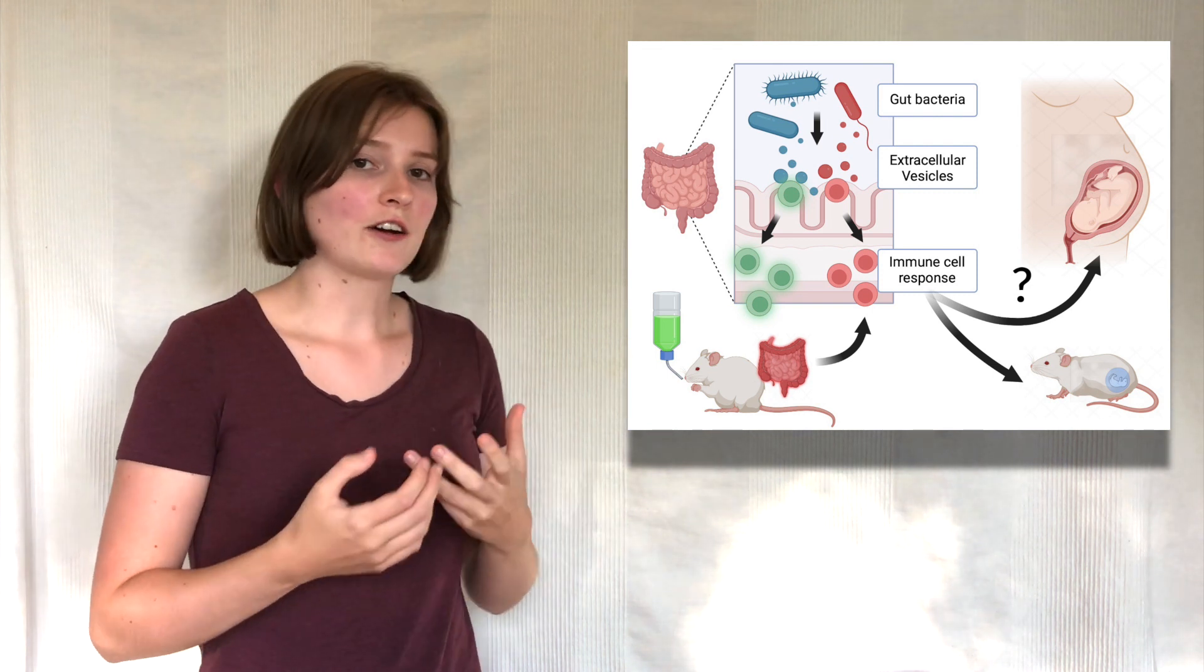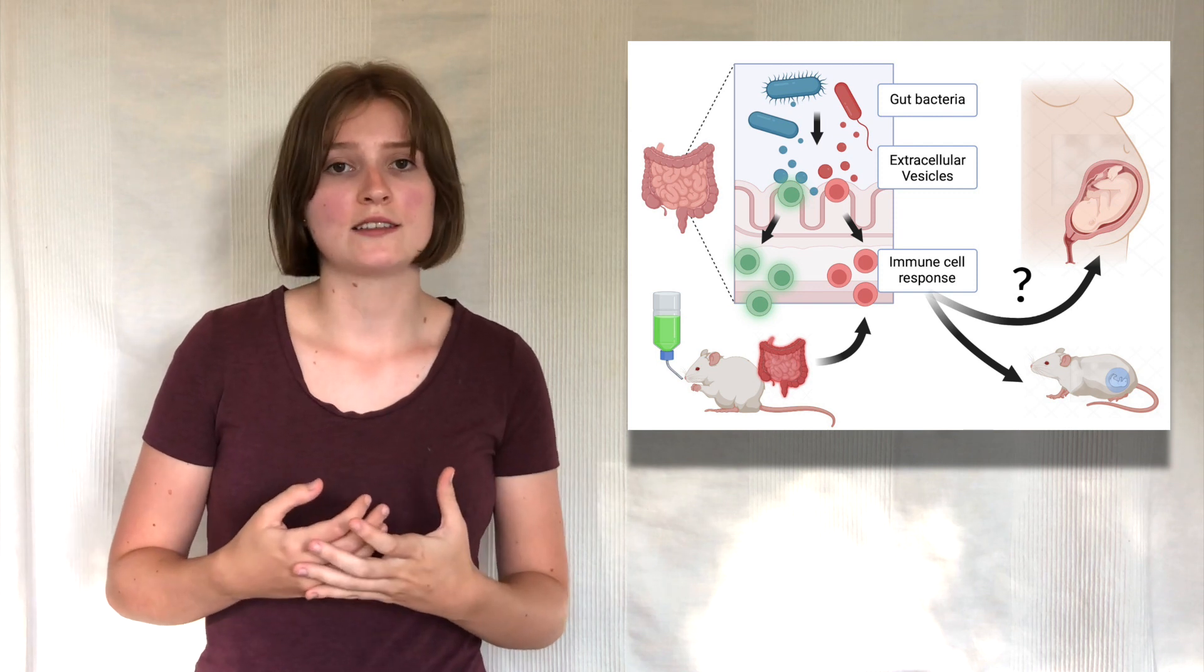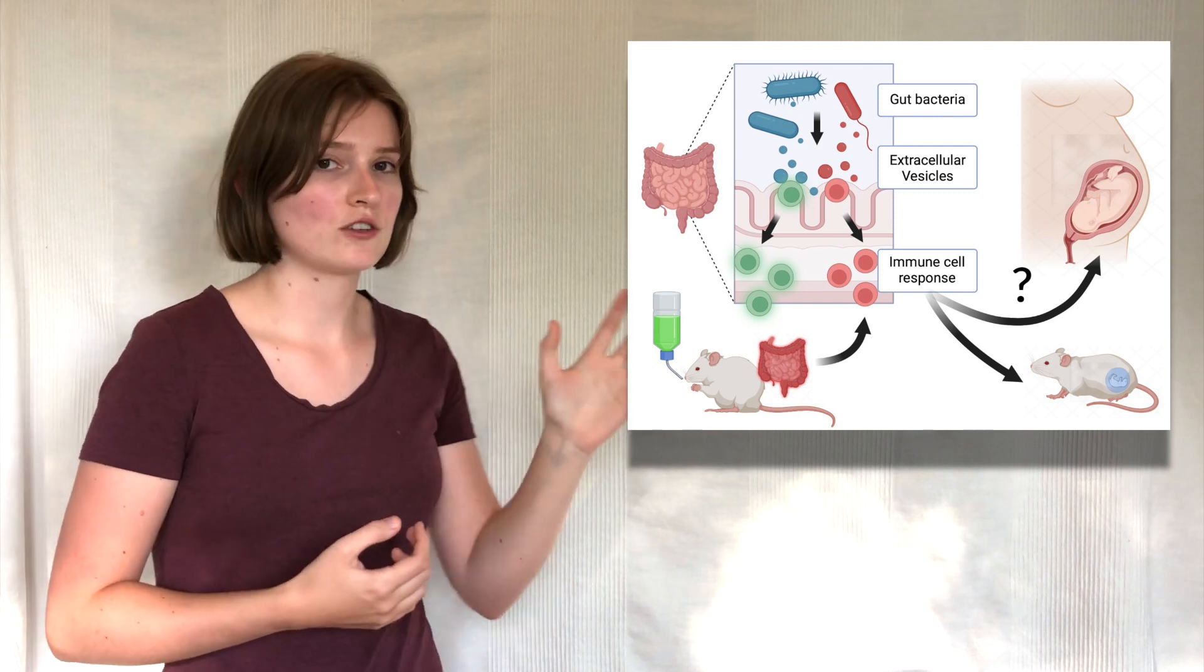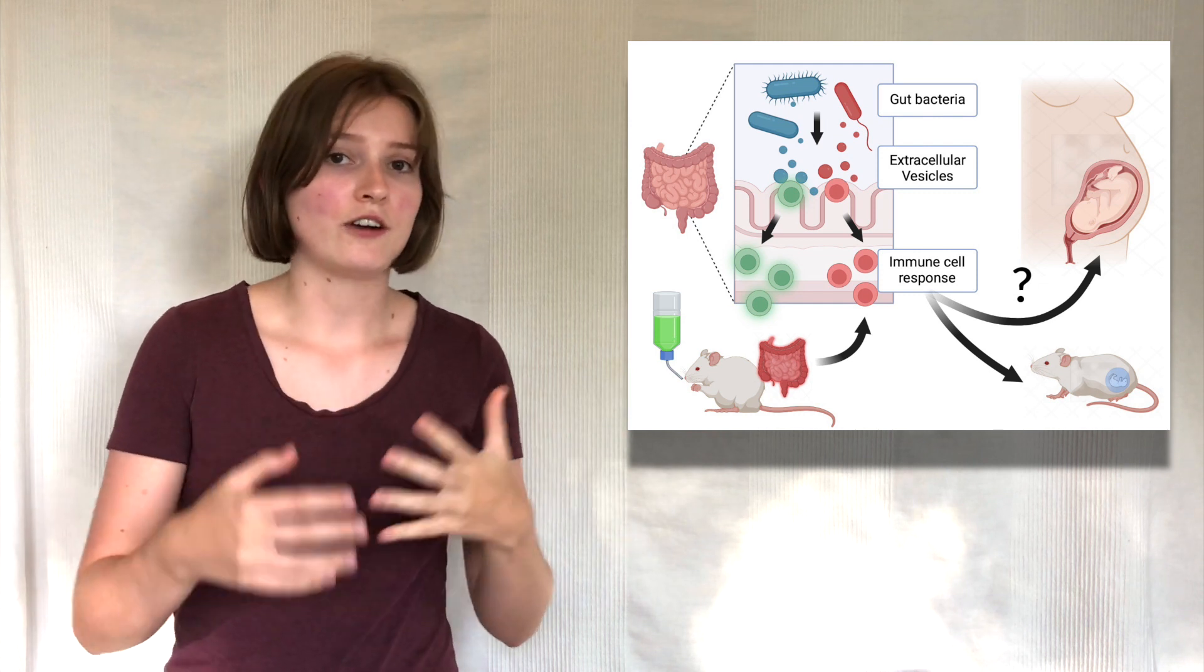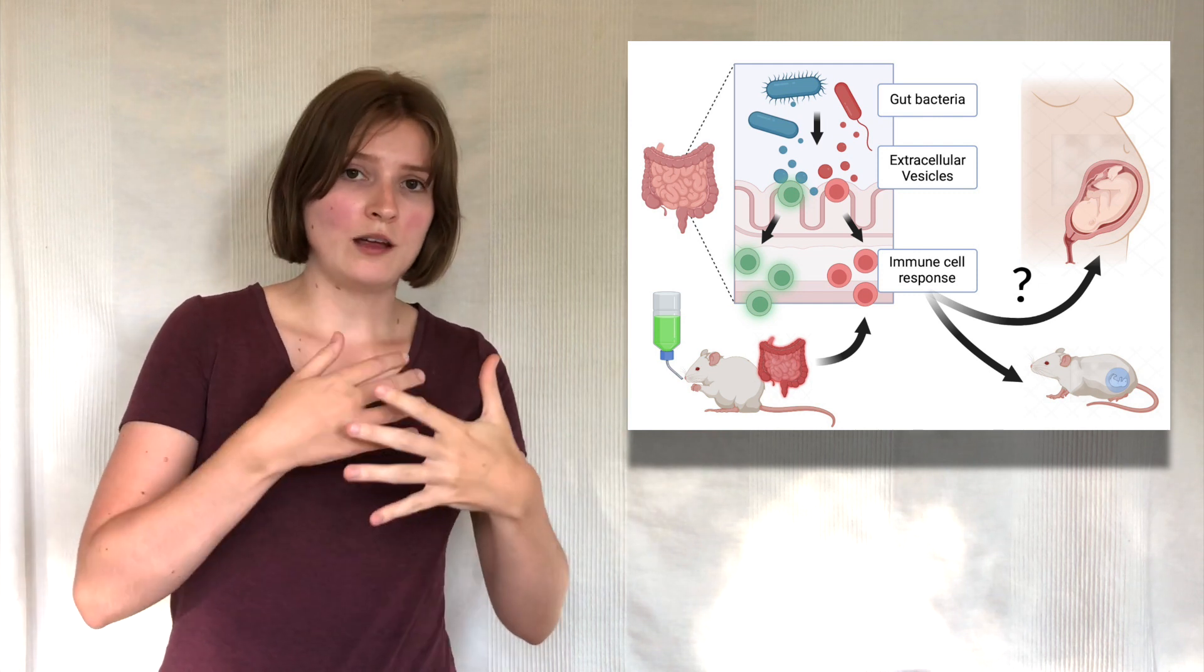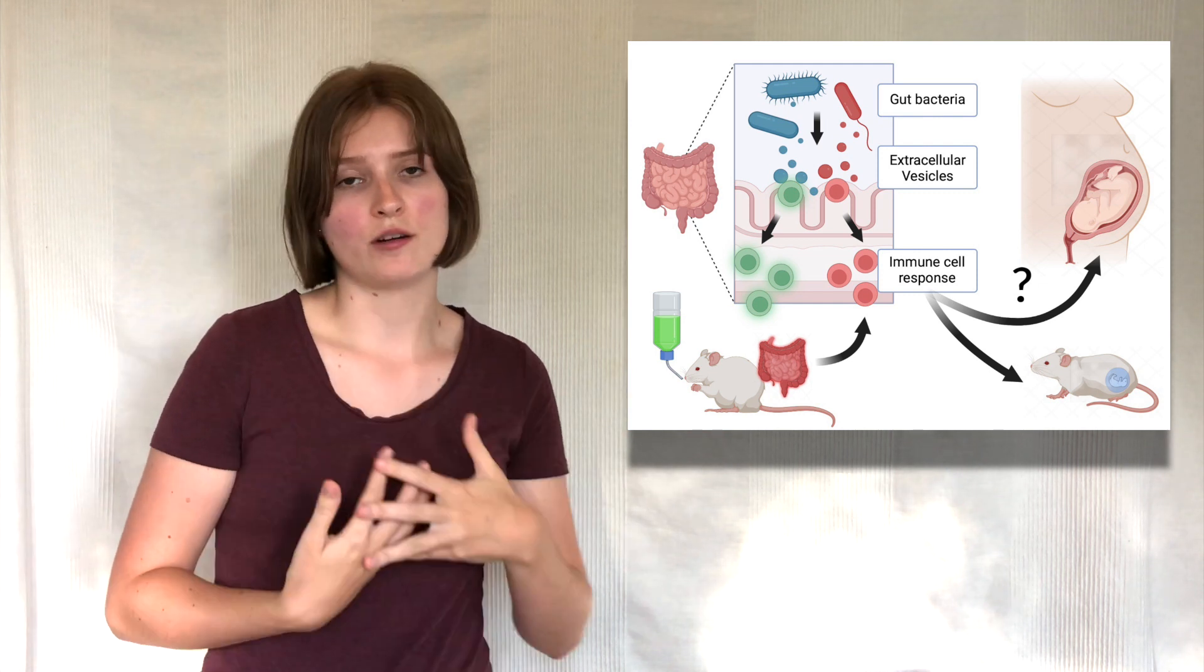Gut bacteria are capable of influencing our immune cells by releasing small particles called extracellular vesicles that interact with our immune cells and are able to change the intensity of our immune response.